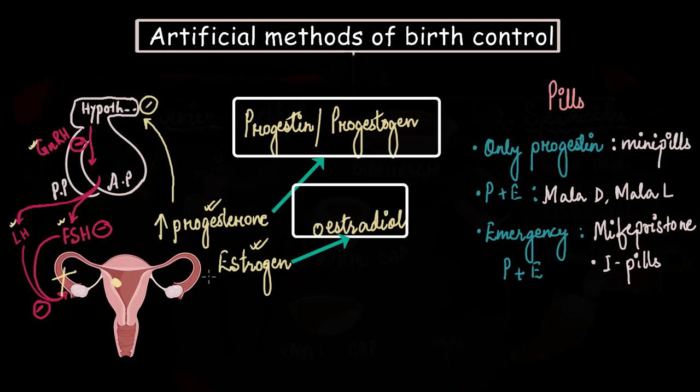Now these pills definitely stopped ovulation or stopped pregnancy, but it had a lot of side effects like vomiting, nausea, headache, because after all, it is playing with the body's hormone levels. You see, the hypothalamus pituitary and ovary axis is all disturbed. And due to all these downsides, right from the 1960s, scientists started finding out alternatives to this estrogen and progesterone pills.